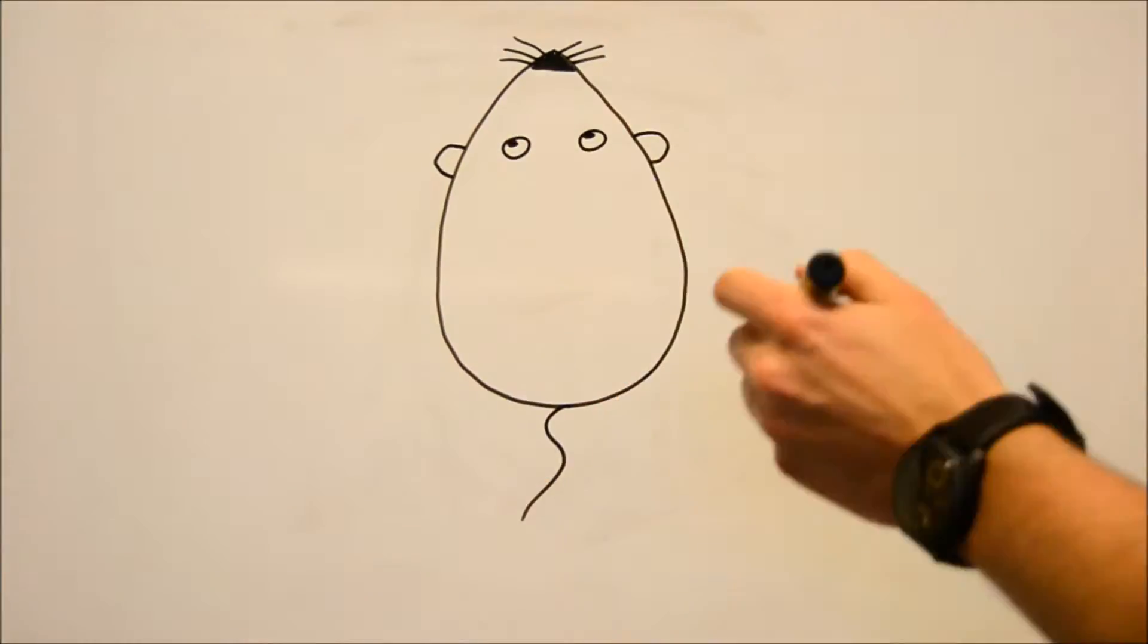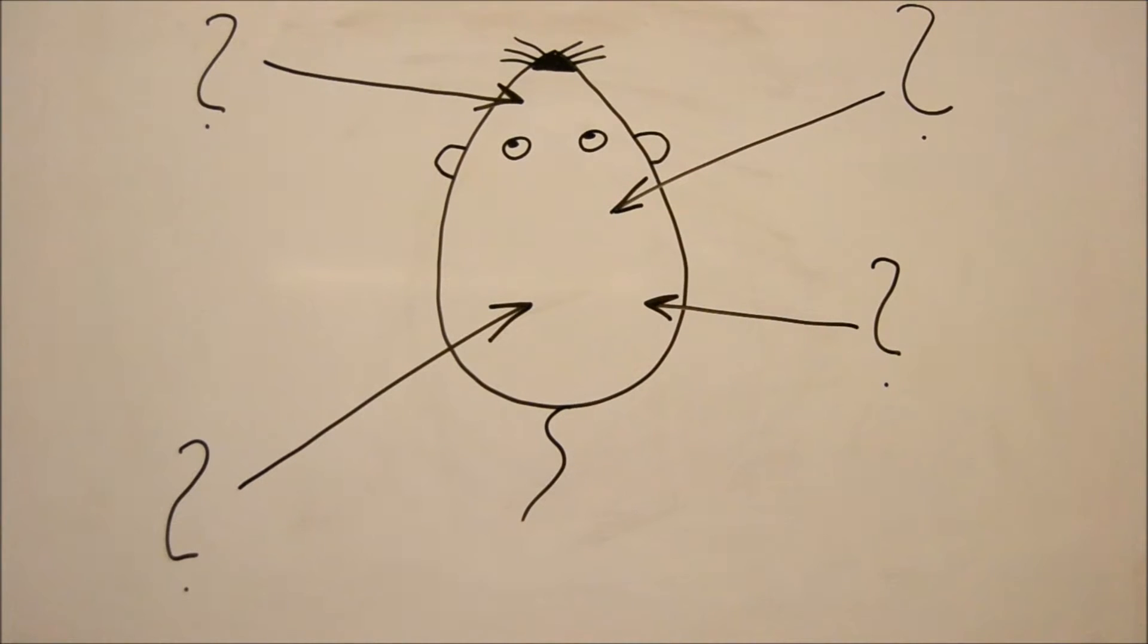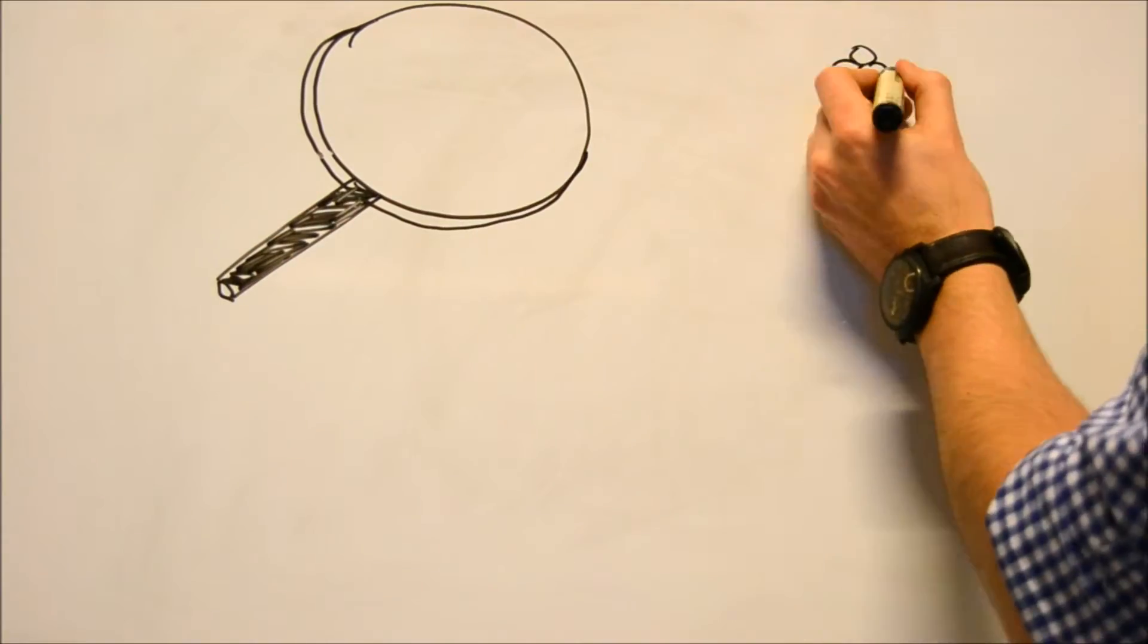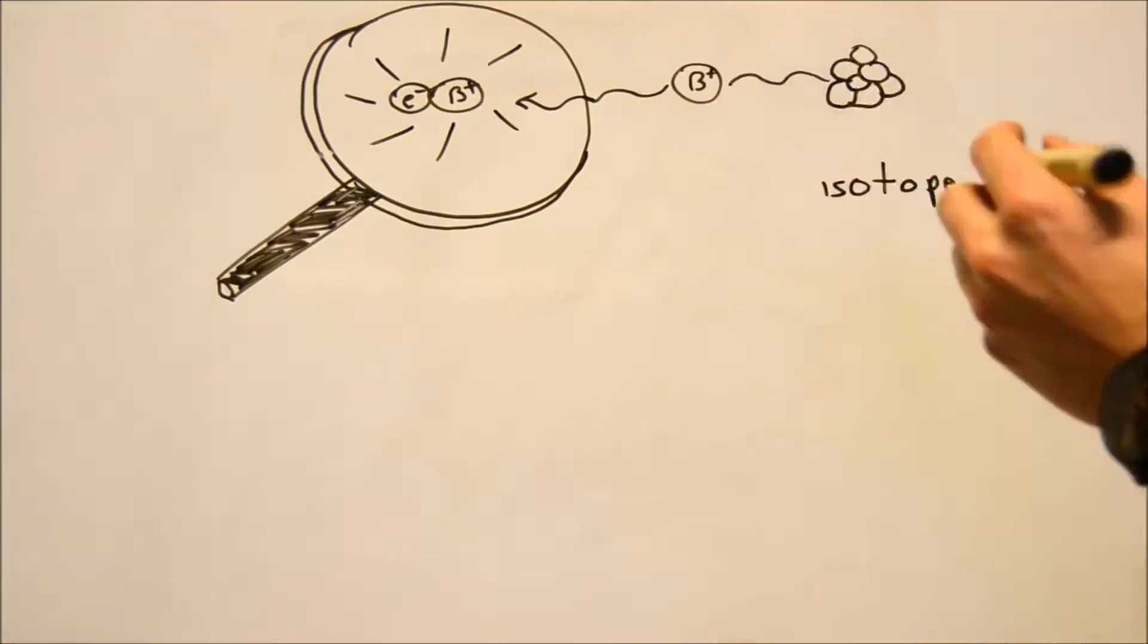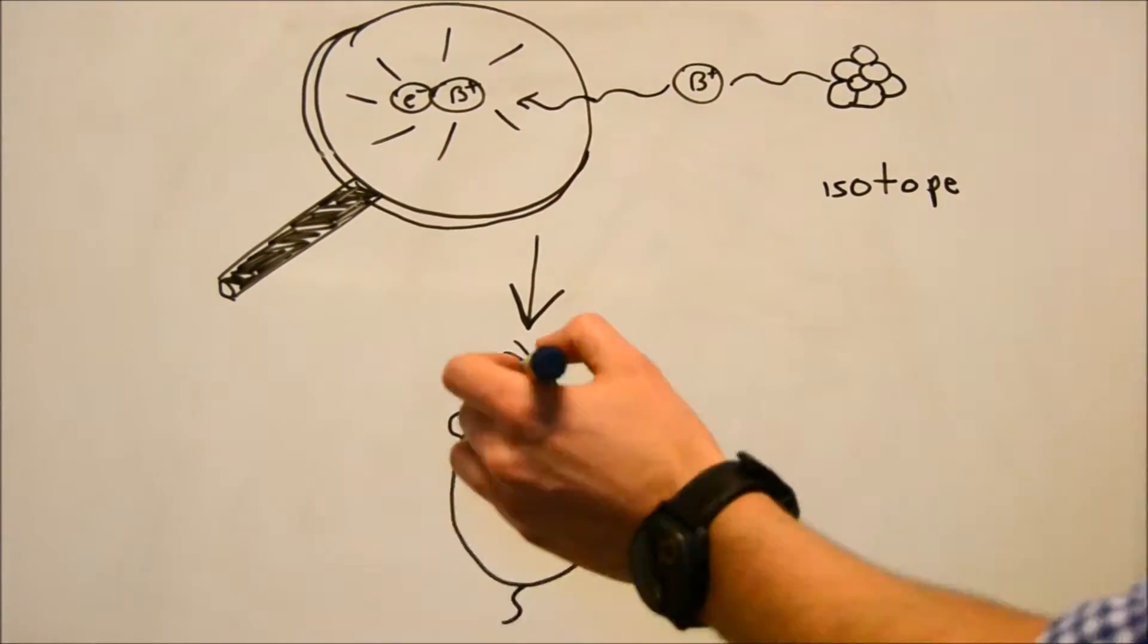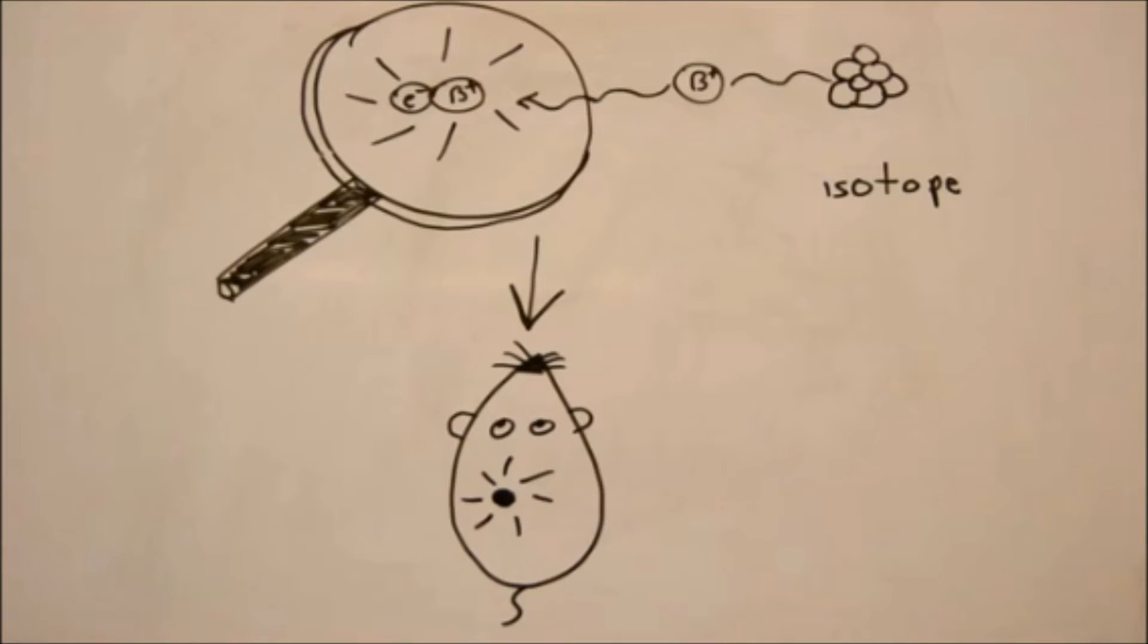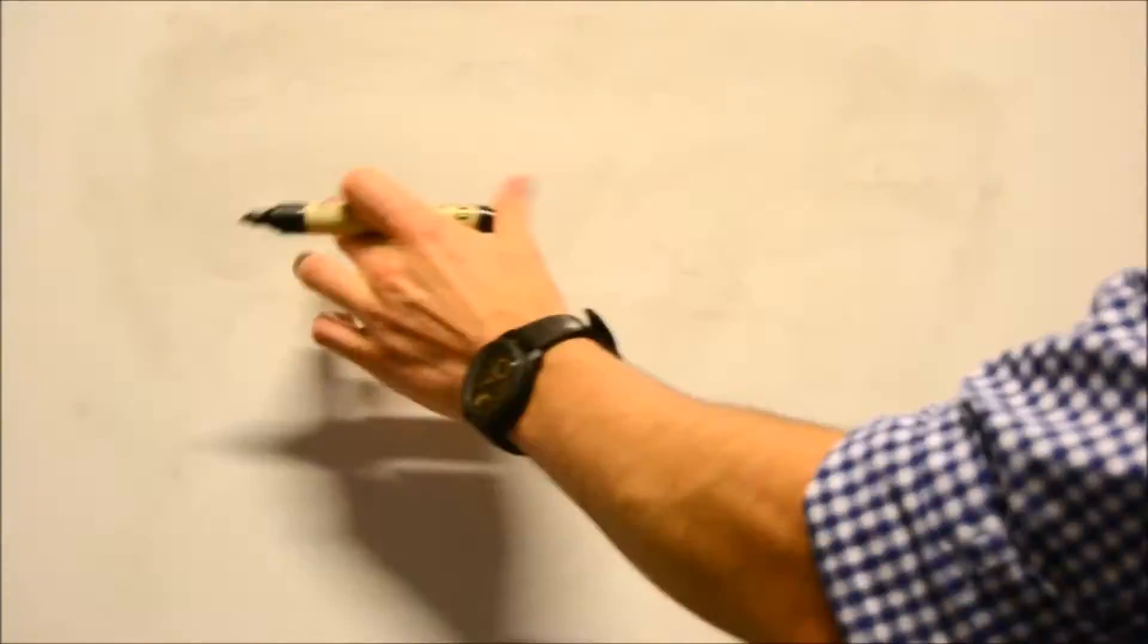First, we want to find out where in the body GDF-15 acts. For that, we will use positron emission tomography, a technique that allows us to scan the whole body of a mouse for radioactive-labeled compounds. Radioactive isotopes create positrons that collide with electrons. The energy created is measured and shows the location of our compound. The first step we need to do is to develop this compound.